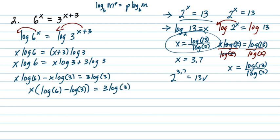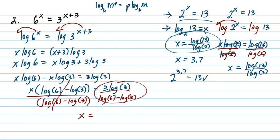And so now I can factor out an x on the left. I get x times the log of 6 minus the log of 3, and that's equal to 3 times the log of 3. Finally, to get x by itself, we have x times this binomial here, log 6 minus log 3. So you're going to be able to cancel these guys, and of course whatever we do to one side we have to do to the other.